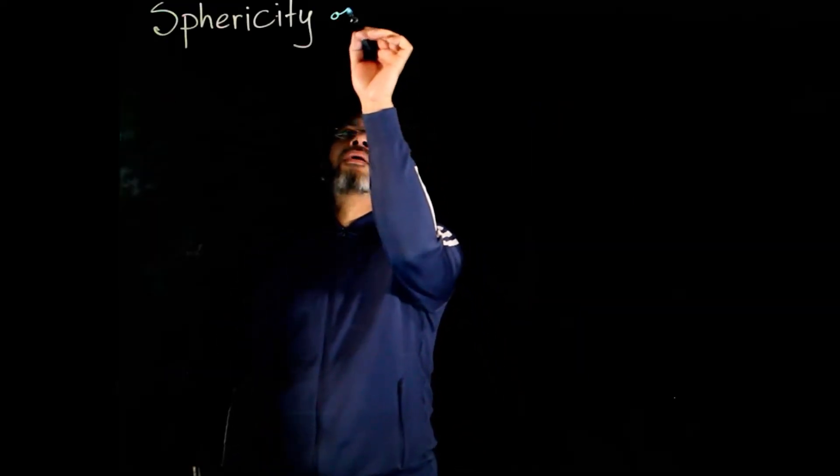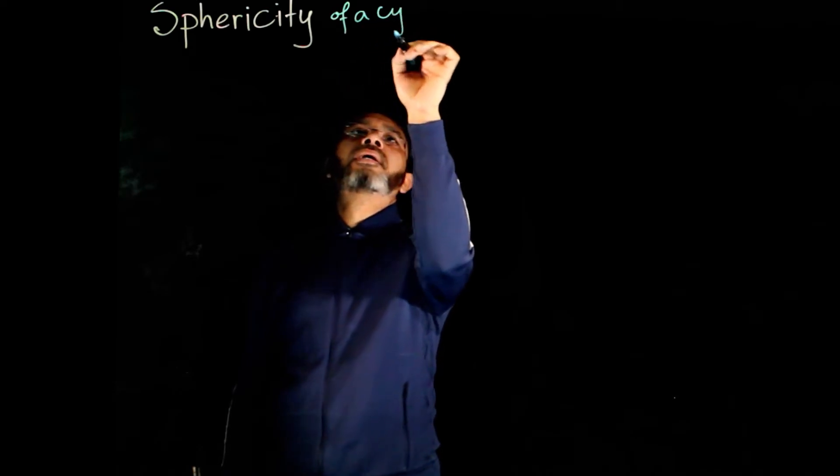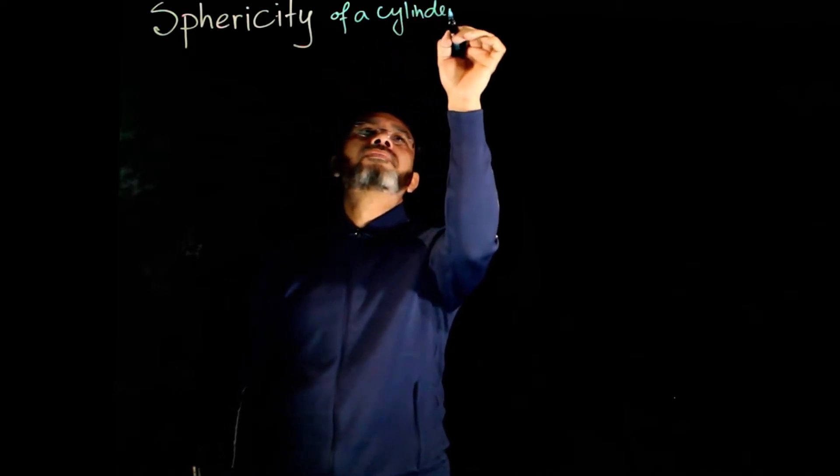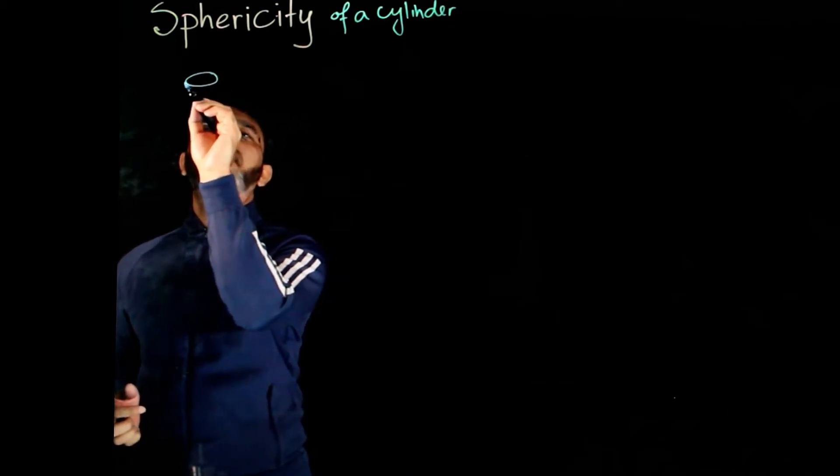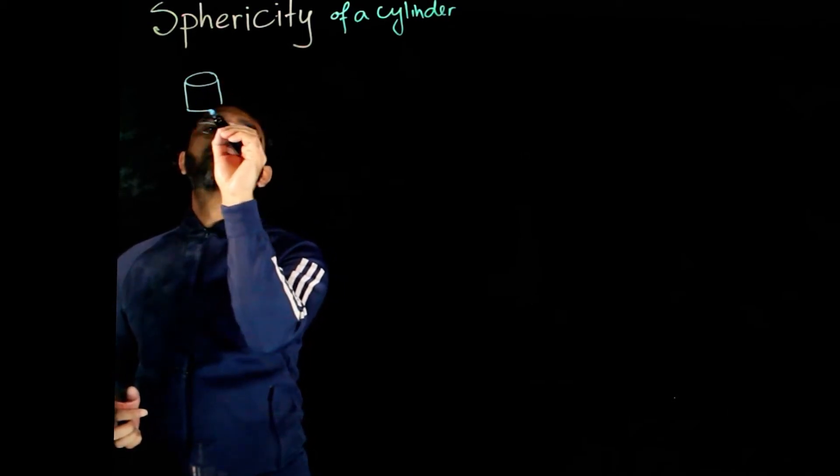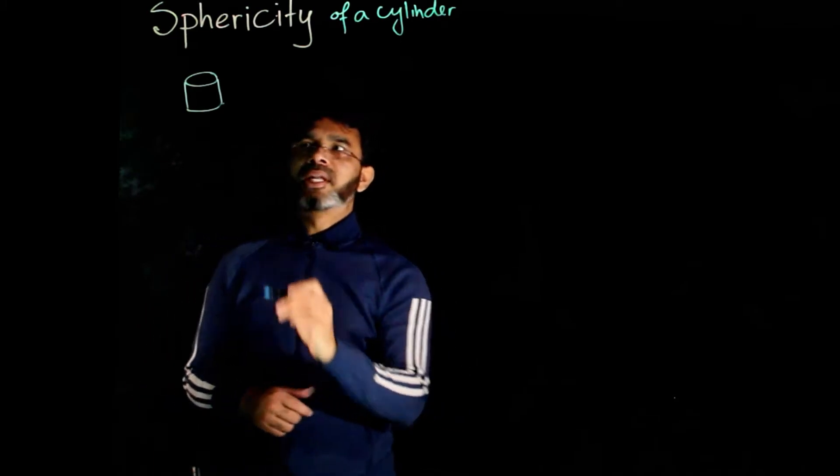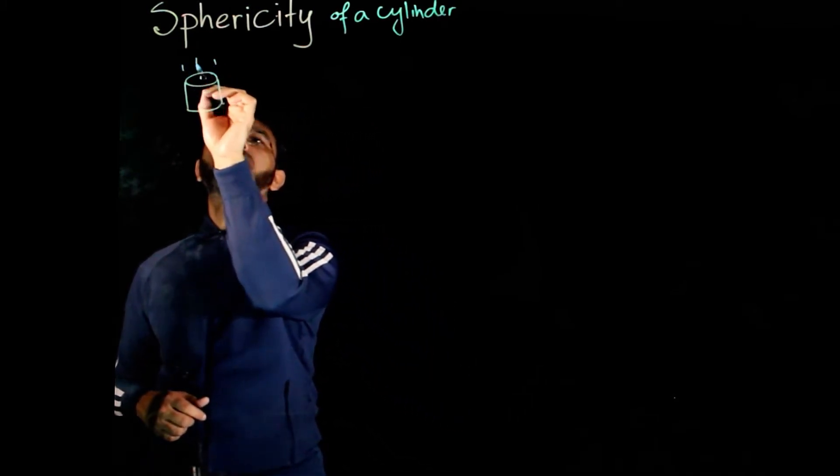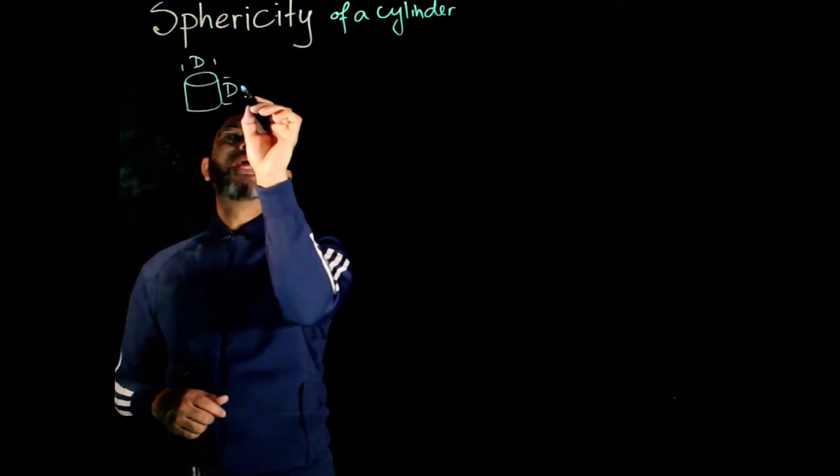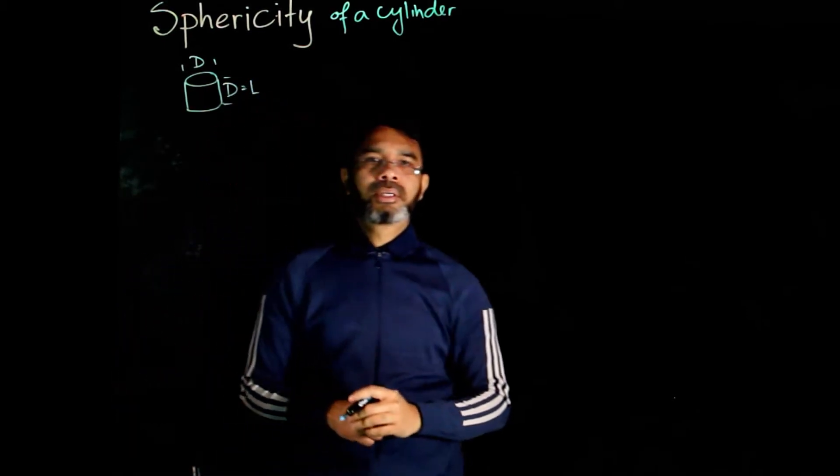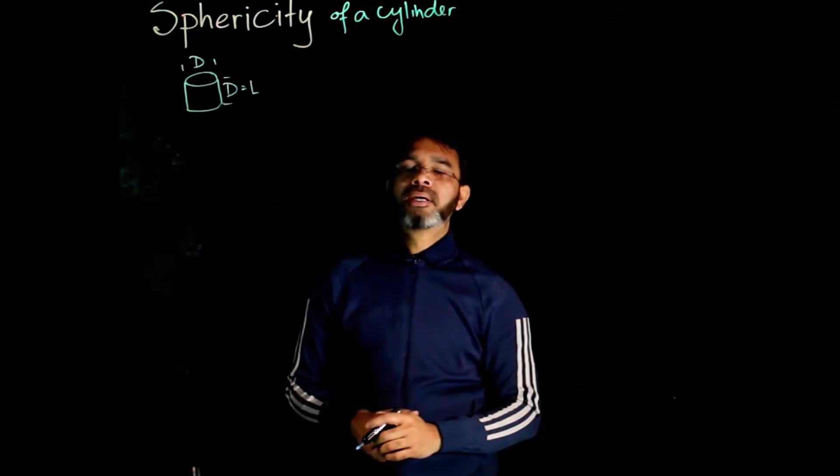Now, let us look at the sphericity of a cylinder. We will take the example of a short cylinder where the length of the cylinder is the diameter. So, length of the cylinder equals the diameter of the cylinder.